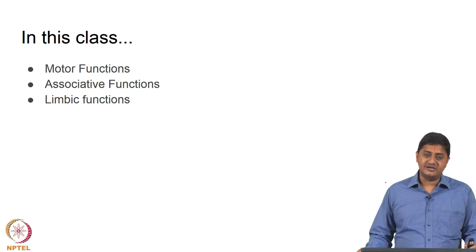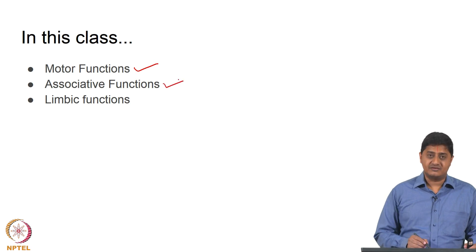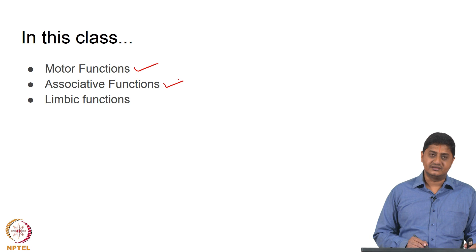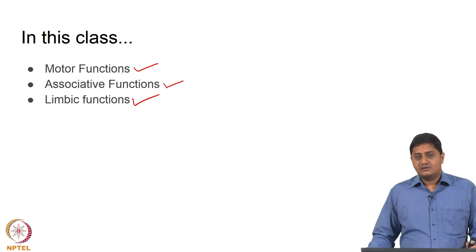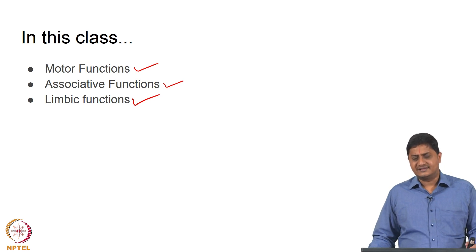In today's class we will be discussing the motor functions of the basal ganglia, the associative or executive decision-making related functions of basal ganglia, and the limbic functions of the basal ganglia. Note that basal ganglia is traditionally considered as a motor nucleus of the brain. For a long time it was believed that basal ganglia is essentially a motor organ or related to motor function.